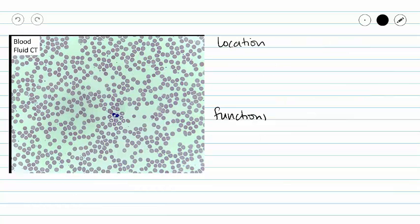So where exactly do we find blood? Our locations are fairly simple. We find blood inside our blood vessels and inside our heart. We do have some organs that filter our blood, but mostly our blood stays inside of our blood vessels in those organs. The exception would be the spleen, but let's keep our location to inside blood vessels and inside our heart.